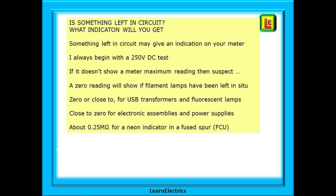Something left in circuit — a lamp or a plugged-in device — may give an indication on your meter and you must take steps to remove or isolate these items before testing. For that reason I always begin with a 250V DC test to check that the circuits are empty, as I call it. If it doesn't show a meter maximum reading — in other words it shows a fail — then suspect a problem. A zero reading will show if filament lamps have been left in situ, or zero or close to zero for USB transformers and fluorescent lamps, and close to zero for electronic assemblies and power supplies. A reading of about 0.25 megaohms is a sure sign of a neon indicator in a fused spur or FCU, most often an immersion heater or a central heating boiler switch left in circuit.